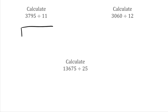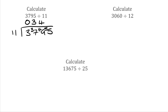For this first question we've got 3,795 divided by 11. To begin with, how many 11s fit into 3? That would be none, so 0, carry over the 3. We then do 11s into 37 — that would be 3, because 11 times 3 is 33, leaving a remainder of 4. Then 11s into 49 — that would be 4, because 11 times 4 is 44, leaving a remainder of 5. And finally, 11s into 55 go exactly 5 times. So our answer is 345.